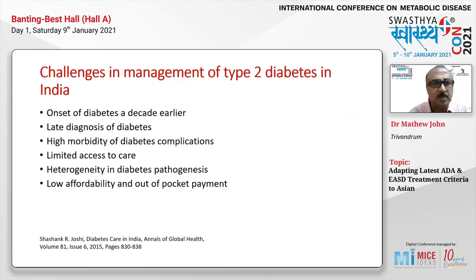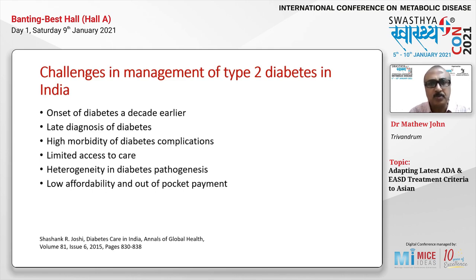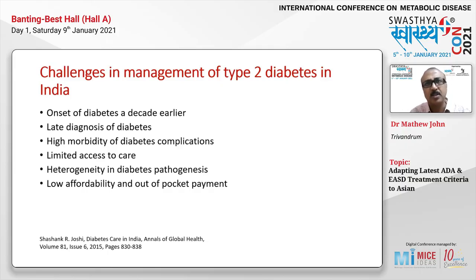One challenge is that the disease onset in Indian patients is a decade earlier — around 35 to 40 years in India versus 45 to 50 years in the West. There is also late diagnosis, meaning patients are much more advanced in the natural history of diabetes by the time they are diagnosed. Studies show higher morbidity from diabetes complications, probably related to late diagnosis, higher HbA1c at diagnosis, or ethnic variation in complication risk.